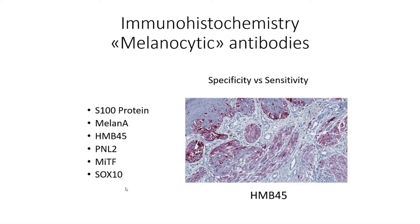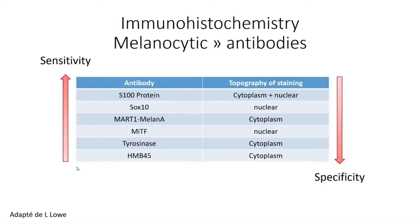Here's a list of the most commonly used antibodies, and here's an example of HMB45 showing the dendritic melanocytes here in the epidermis. Adapted from my friend Lori Lowe, you can see the variation in sensitivity. S100 protein is the most sensitive antibody to recognize melanocytes, and HMB45 is going to be the most specific antibody.